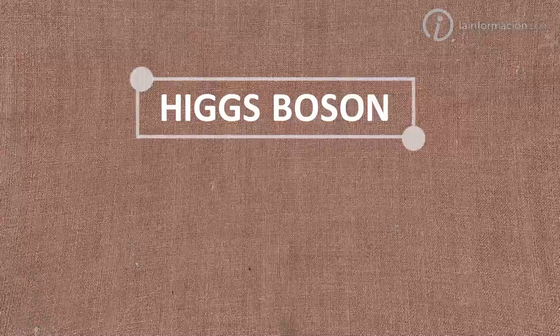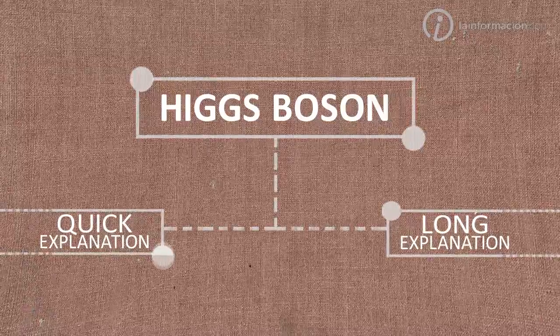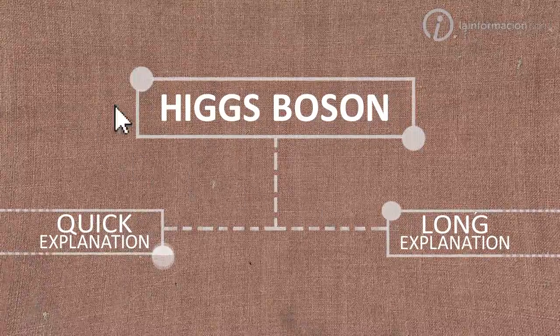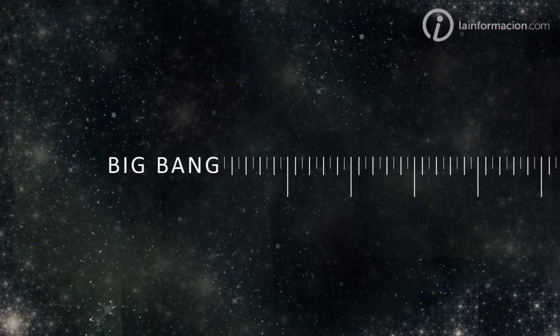There are two possible ways to explain what the Higgs boson is: a quick one and a long one. For the quick explanation, we'd have to travel 13,700 billion years back in time, all the way over to the Big Bang.